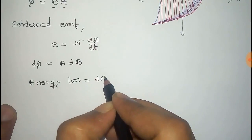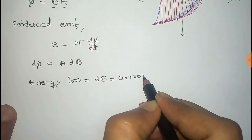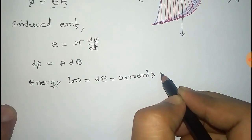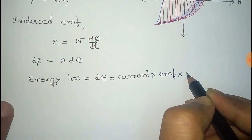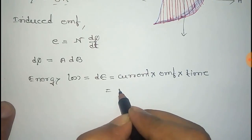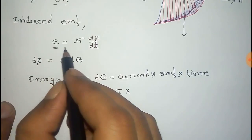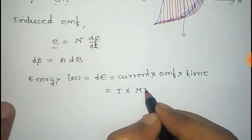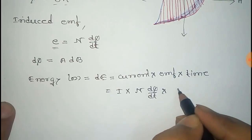...is given by dE equals current into emf into time. Now current is given by I, emf is given by N dφ by dt, and time is dt.